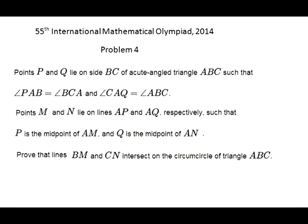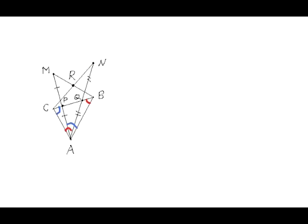This problem is not too hard. We see on this picture triangle ABC with points P and Q on side BC, where point P is the midpoint of straight line segment AM, and point Q is the midpoint of segment AN,